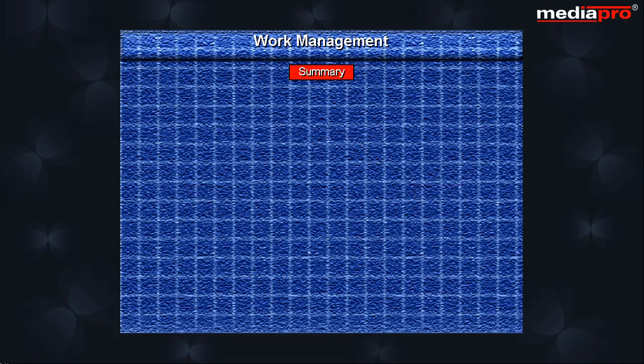With this, we come to the end of this chapter. In this chapter, we studied work management. We saw both interactive and batch processing. We studied about jobs and saw the different types of jobs. We also looked at subsystems and subsystem descriptions.